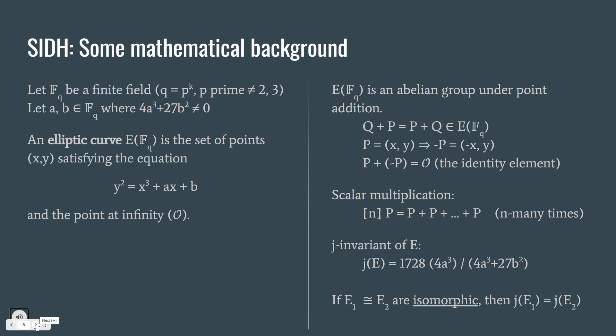Let me mention a little bit about the mathematical background of the isogenies. Let's first start with the elliptic curves. Let's say we have a finite field Fq and two points, two numbers a and b on this field, such that 4a cubed plus 27b squared is not zero. So, an elliptic curve is the set of points (x,y) satisfying the equation y squared equals x cubed plus ax plus b, and the point at infinity O.